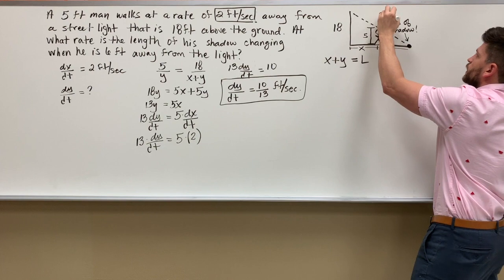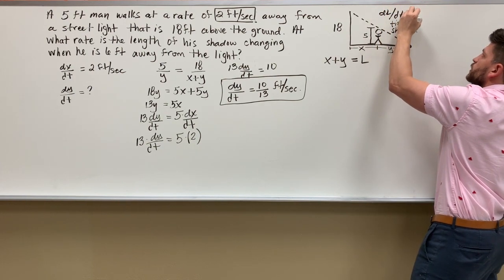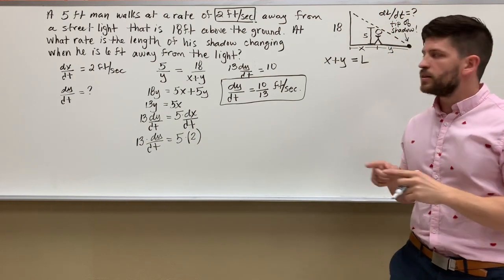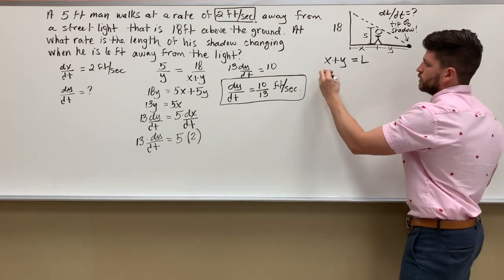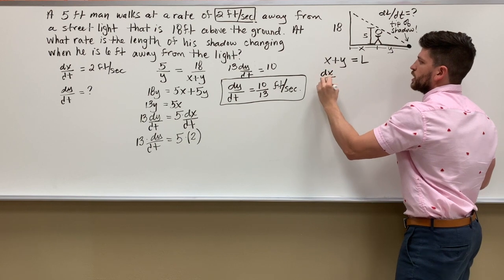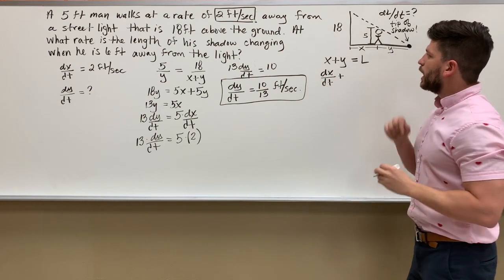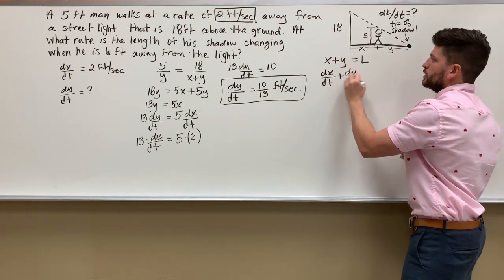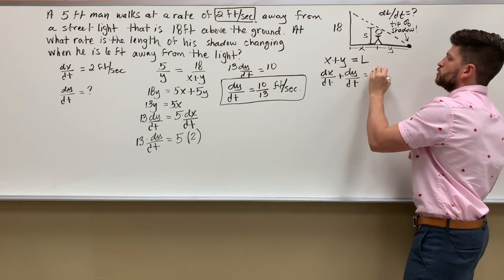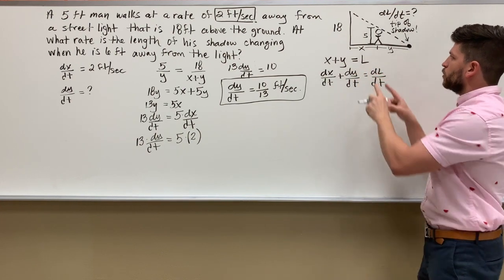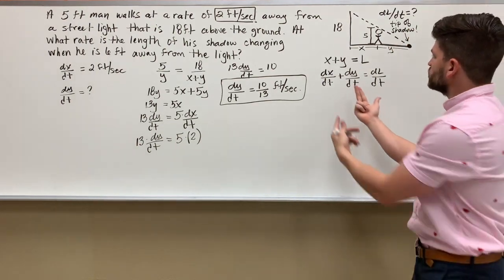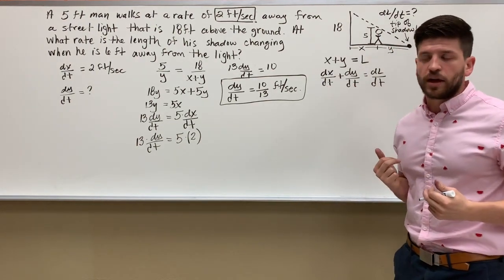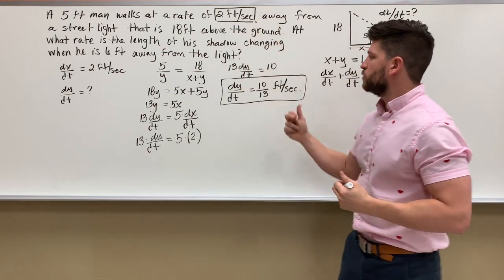So what we really want to find is dl/dt - at what rate this whole side length is changing. So I have my equation, I take the derivative. x just goes to dx/dt, y will just go to dy/dt, and l will go to dl/dt. So the length - this tip of the shadow - is going to be changing. It's just going to be the sum of dx/dt and dy/dt. We know dx/dt, we just found dy/dt.